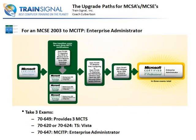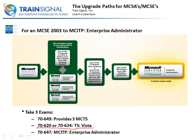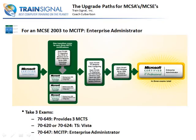If you want to jump up to MCITP Enterprise Administrator and you are already an MCSE, and you want the equivalent in Server 2008, you're going to need to take only three exams. The 7649 again — which provides those three MCTSs — you'll still need to take a Vista exam to get your Technology Specialist in Vista. You can take the Configuration or the Deployment exam. Then you'll need to take the 7647 Enterprise Administrator level exam. You can take them in any order, but you still need to complete all three.